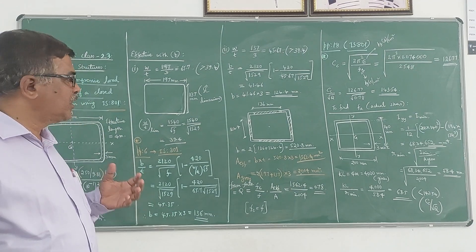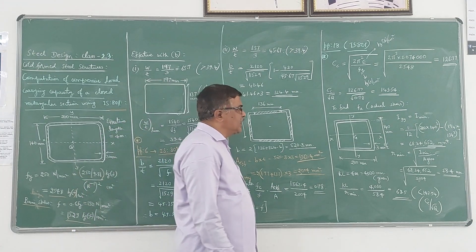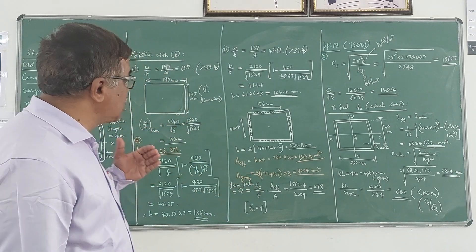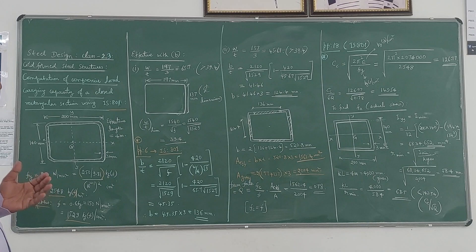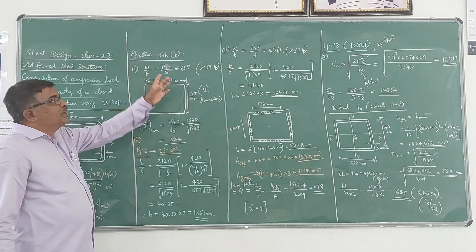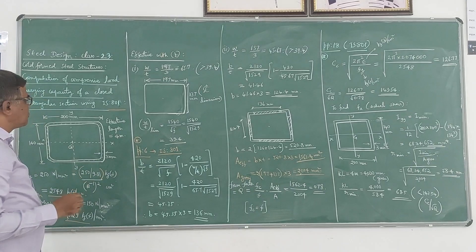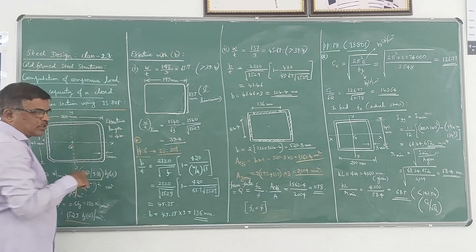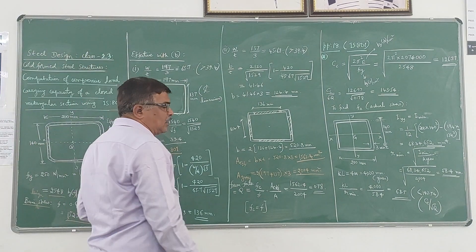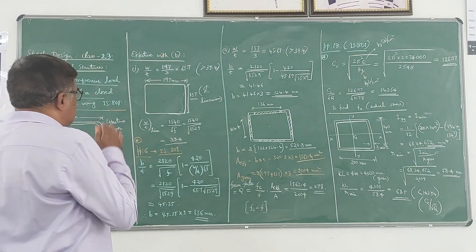Now let us find out the load. To find out the load, we need the effective area. As explained in the earlier lecture, the load is given by effective area multiplied by the actual stress that is going to be developed. To calculate the effective area, we first need to find the effective width B of this section. Please note that this is a closed section — unlike the channel section done previously.